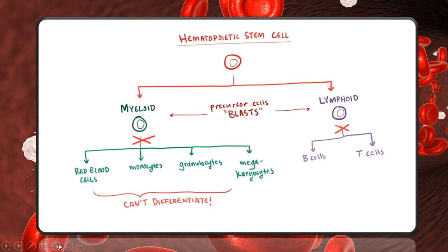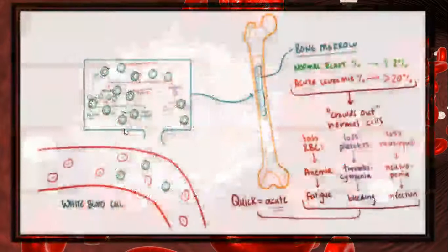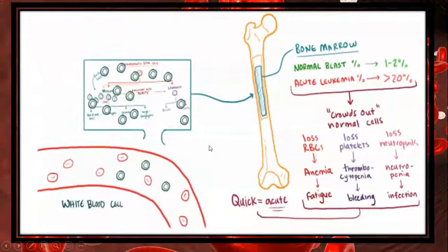But in acute leukemia, cells lose this ability to differentiate or mature — for example, they might get to the myeloid stem cell stage but cannot differentiate any further. When they cannot go anywhere, they start to build up, and since this is all happening in your bone marrow, this buildup will also occur there.